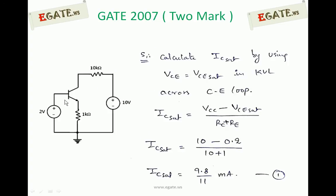First, assume the transistor is in saturation. Saturation region means the collector current has become saturated — it no longer depends on base current. In the active region, as base current increases, collector current increases. But in saturation, collector current becomes saturated, so even if you increase base current, collector current does not increase. The voltage across collector to emitter in saturation equals 0.2 volts.